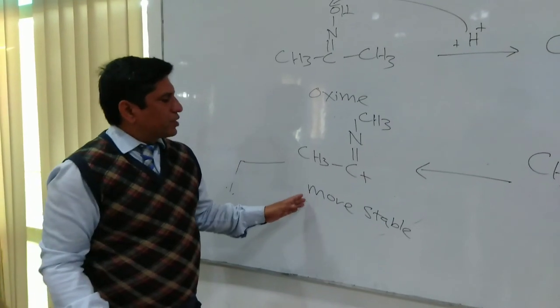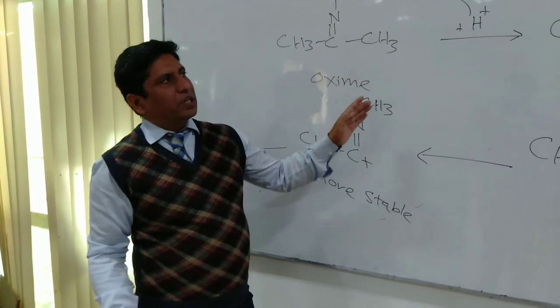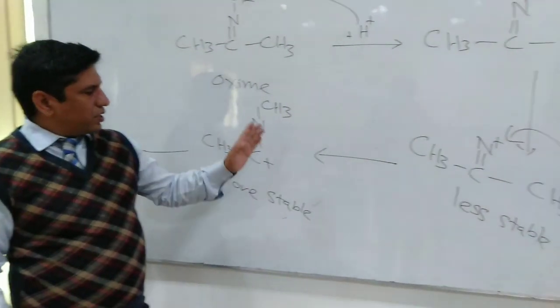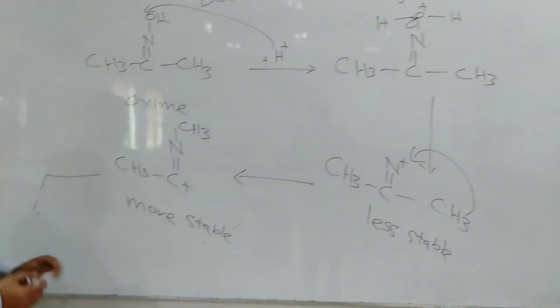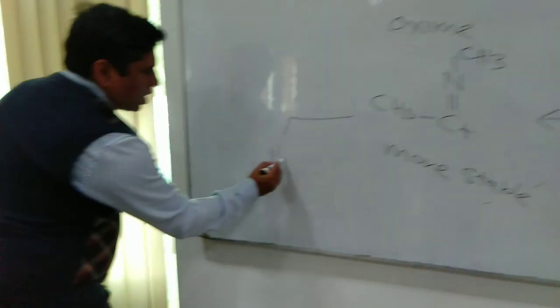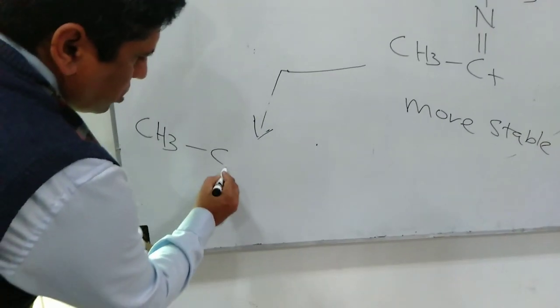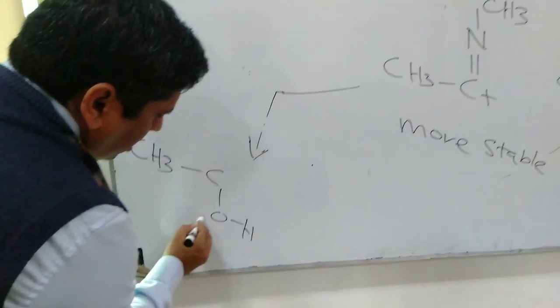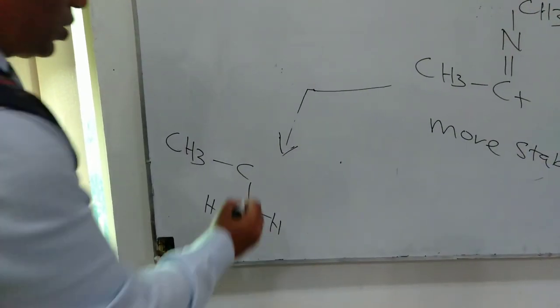In the next step, that water molecule which has been regenerated in the previous reactions is added to that carbocation, the more stable carbocation, in that form. As oxygen can only make two bonds, the third bond is a coordinate covalent bond.